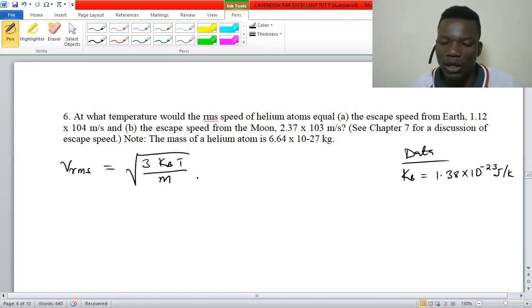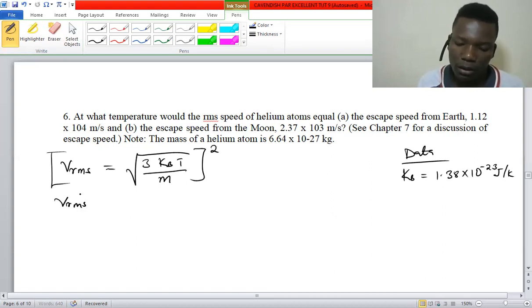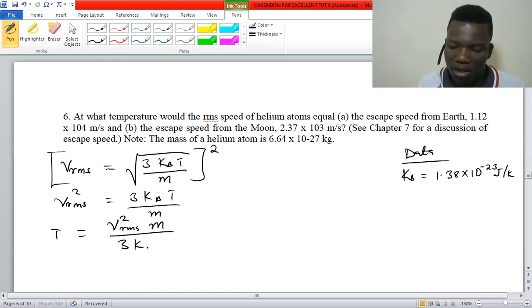Now we are looking for temperature, so we just have to square the whole of this equation. We have v_rms squared equals 3kT/m, and temperature is going to be v_rms squared times m over 3k_B. For part (a), we just substitute the values.